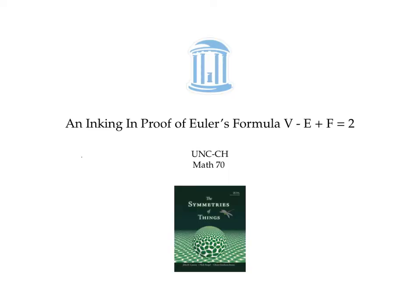In this video, we used an inking-in argument to show that V minus E plus F for a black map on the sphere was the same as V minus E plus F for a purple map on the sphere we got by inking in both the black and the red map. And this is also the same as V minus E plus F for the red map, since we could have started with the red instead of the black and we still would ink into the same purple map.